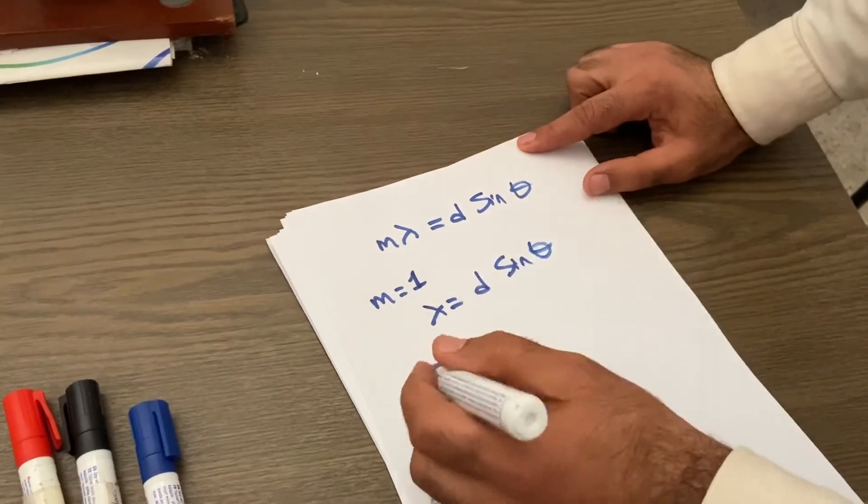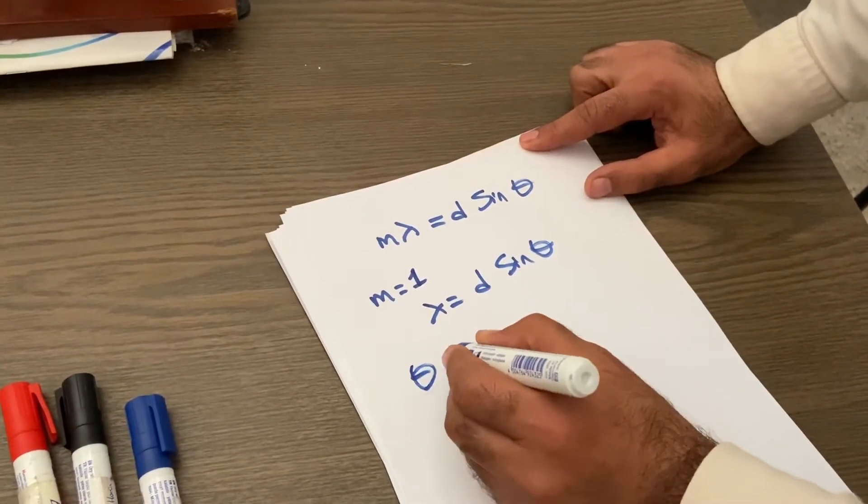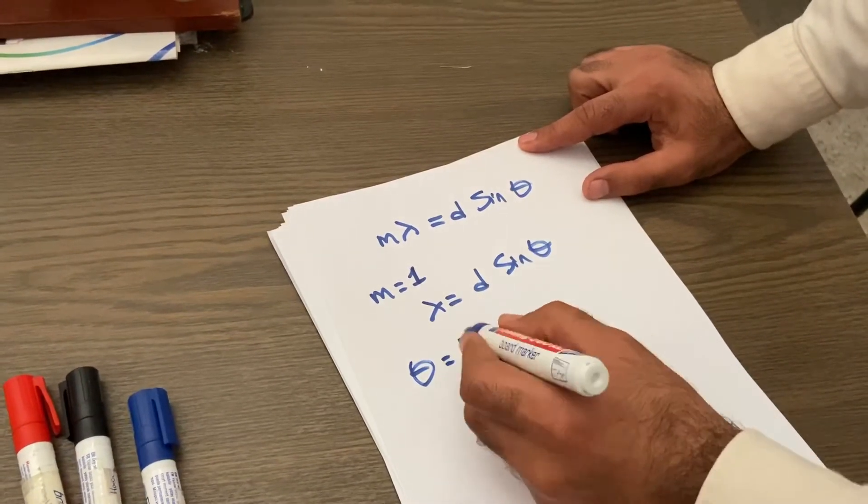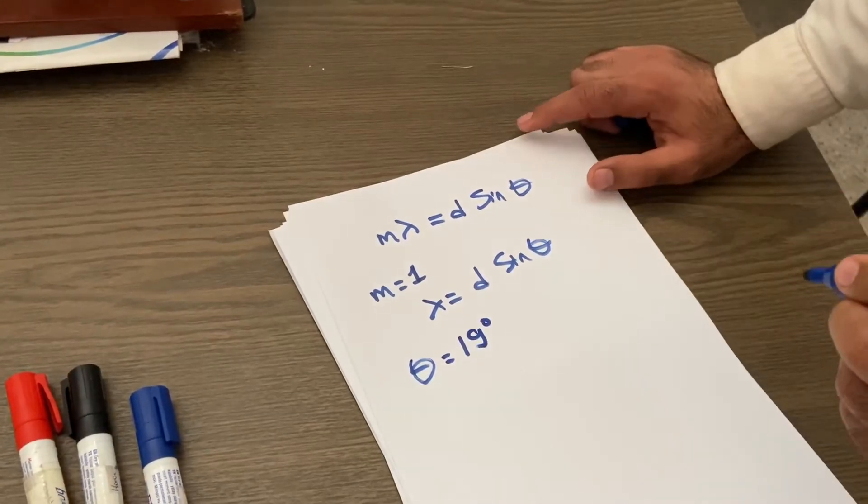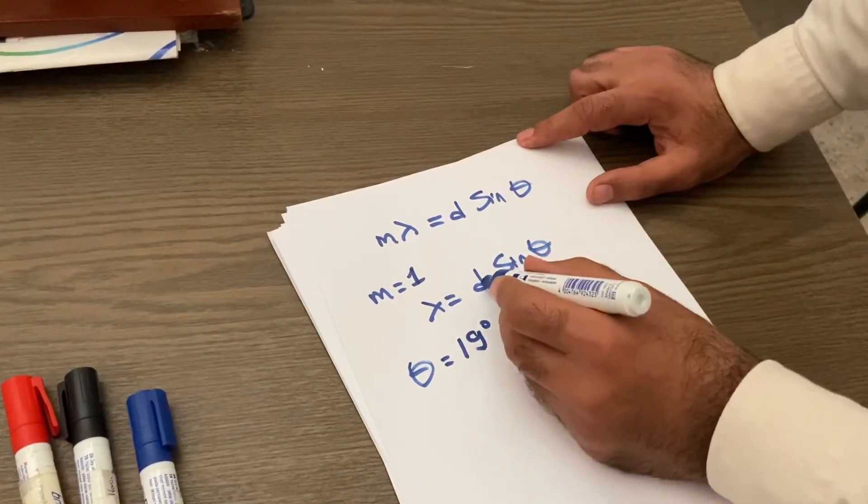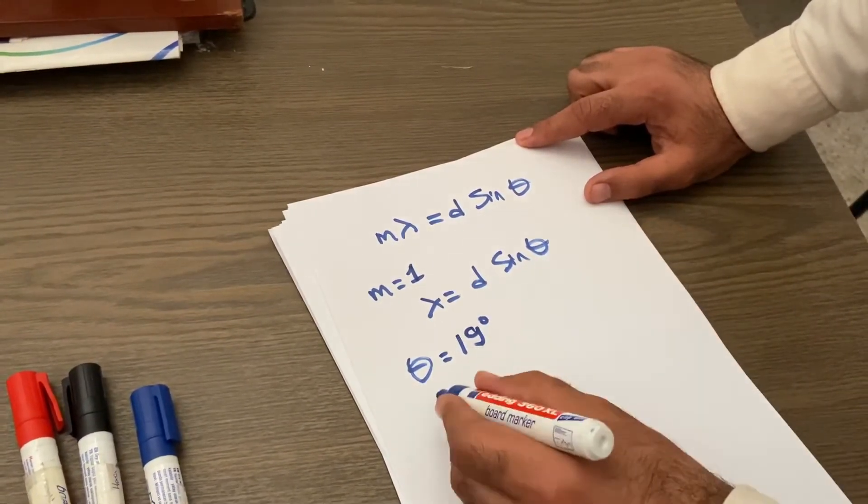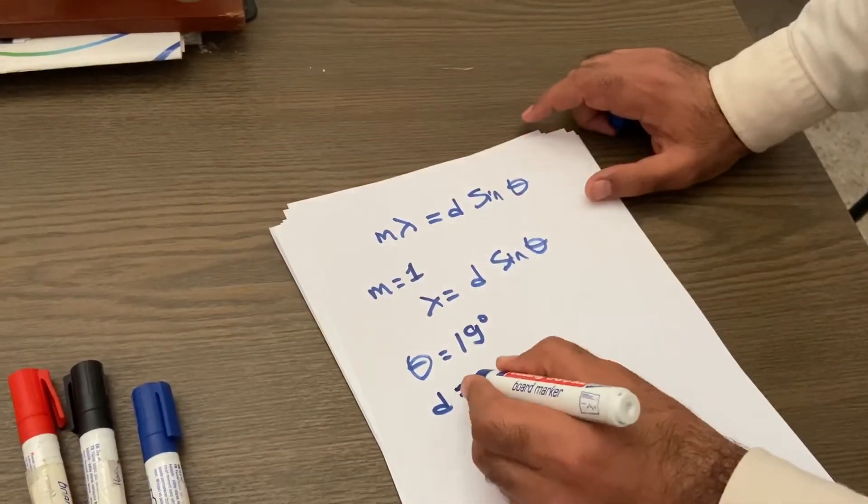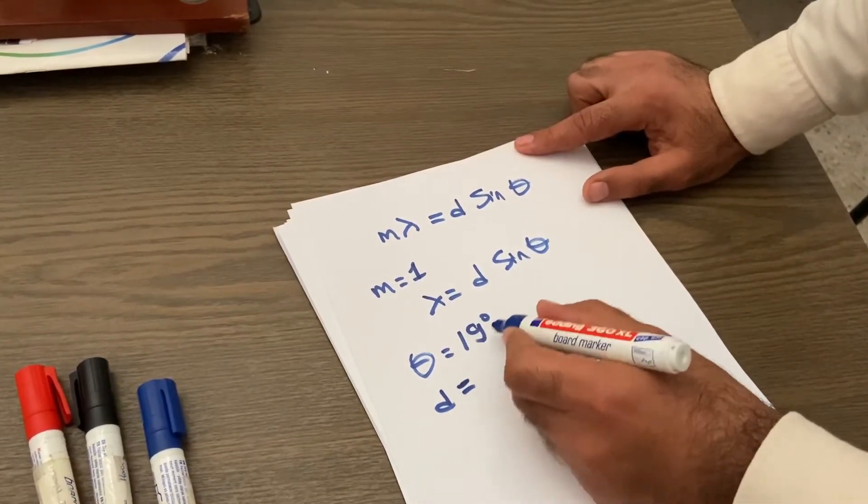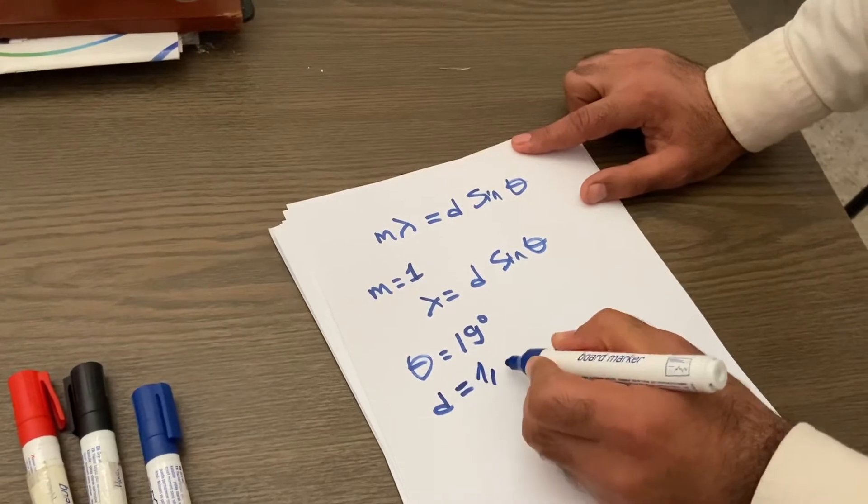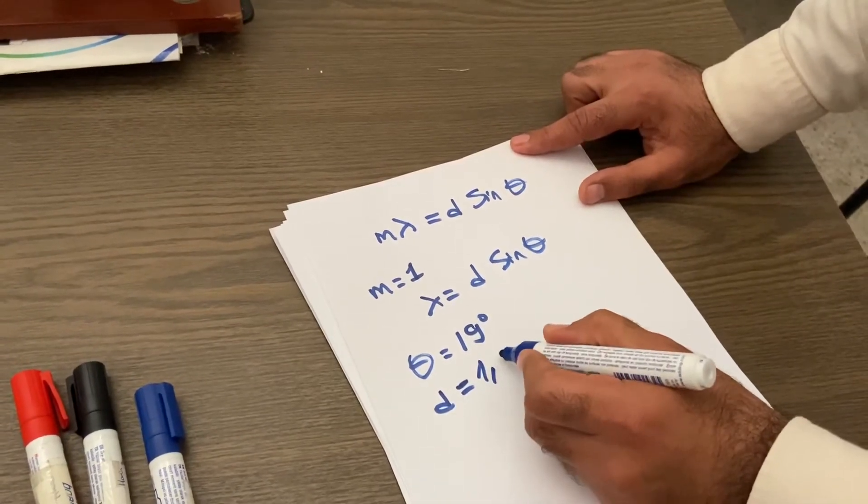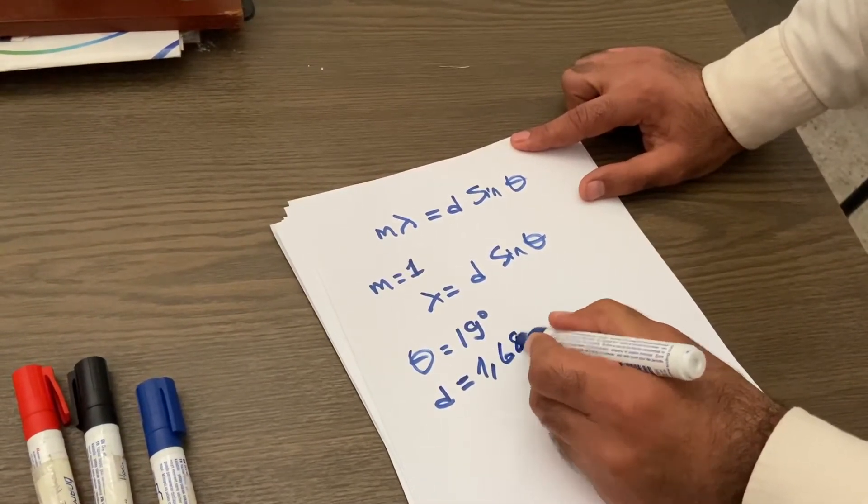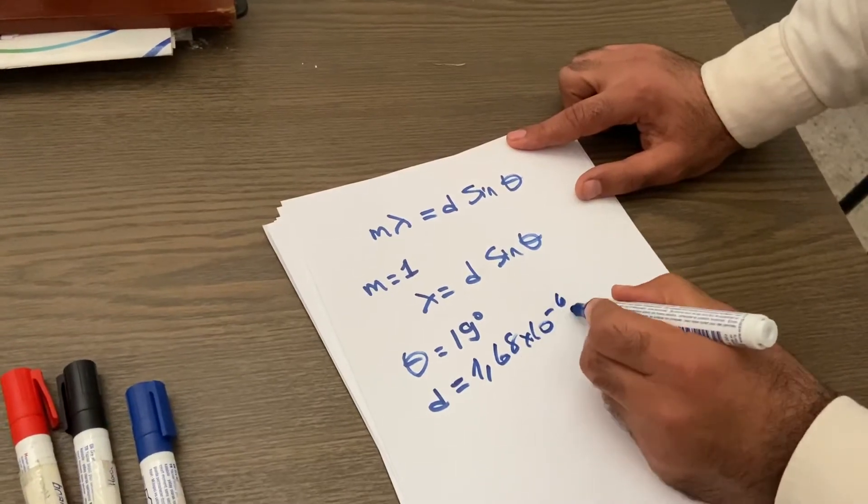We measured the theta and it is around 19 degrees. And D is—we already measured it in the other experiments. You can have a look at the videos. It's one point six eight times ten to minus six meters.